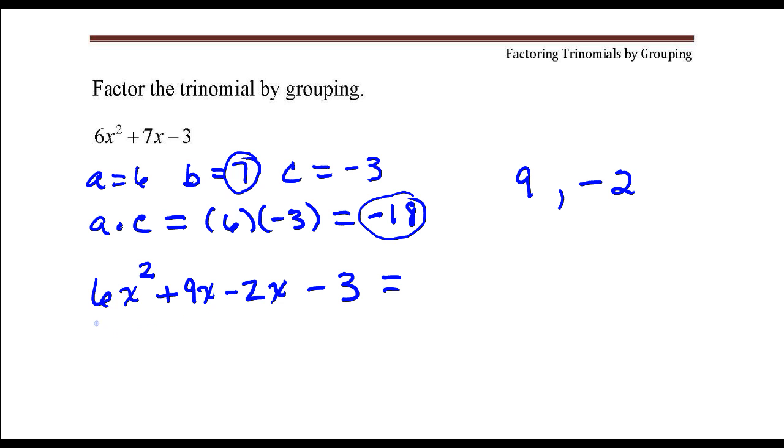I'm going to factor the greatest common factor out of the first two, then we're going to factor the greatest common factor out of the last two terms. The greatest common factor of 6x squared and 9x is 3x. The greatest common factor of minus 2 and minus 3 would be negative 1.